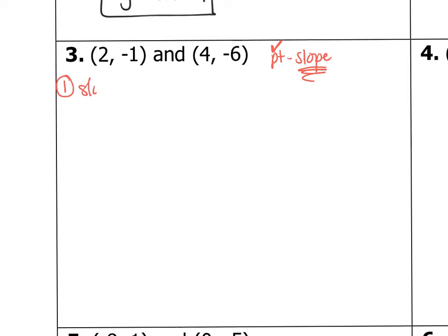So let's find the slope. So Y minus Y is equal to X minus X. So negative 1 minus negative 6 over 2 minus 4. That's equal to 5 over... Nope. Yeah. 5 over 2 minus 4 is negative 2 or negative 5 halves. All right. That's my slope.